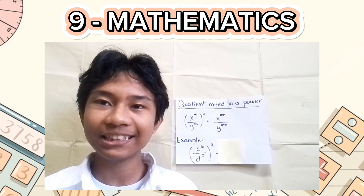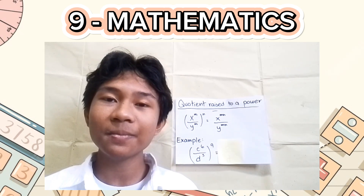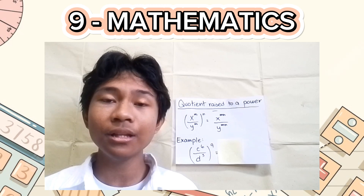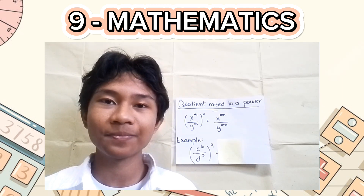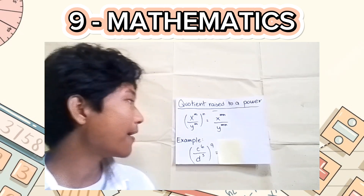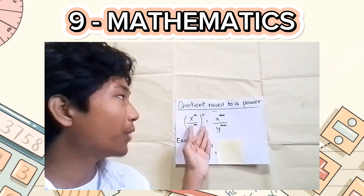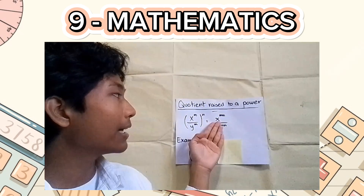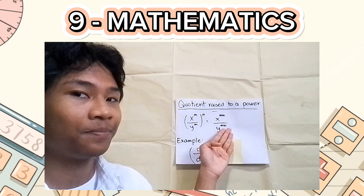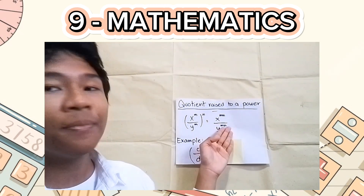Last but definitely not the least is the quotient raised to a power. This law is like a combination of the quotient rule and the power rule, because in this law we can apply both subtraction and multiplication of exponents. To visualize, here we have x raised to m over y raised to m, all raised to n. If we will simplify this, we will get x raised to m times n over y raised to m times n.